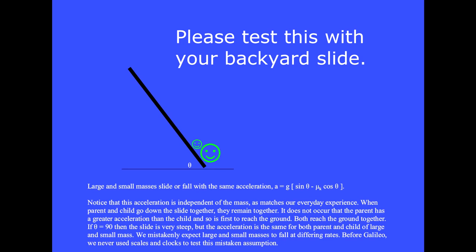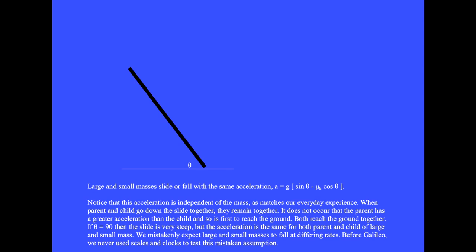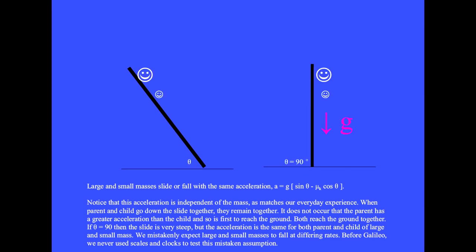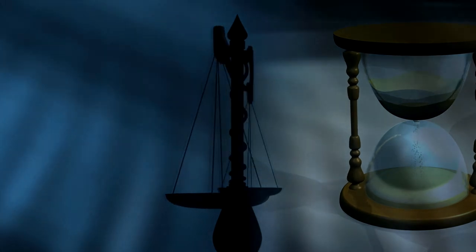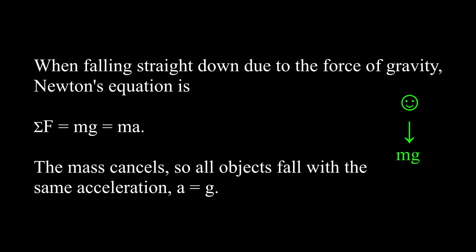Please test this with your backyard slide. If theta equals 90 degrees, the slide is very steep, but the acceleration is the same for both parent and child regardless of mass. We mistakenly expect large and small masses to fall at differing rates. We are okay with two masses sliding together on the slide, but when falling straight to the ground, we expect the larger mass to hit first. Before Galileo, no one used scales and clocks to test this mistaken assumption. When falling straight down due to gravity, Newton's equation is the sum of the forces equals mg equals ma. The mass cancels, so all objects fall with the same acceleration g. Please drop large and small masses and see if they hit the ground together.